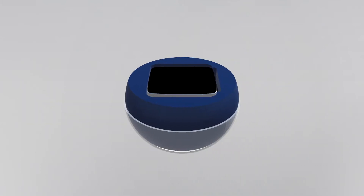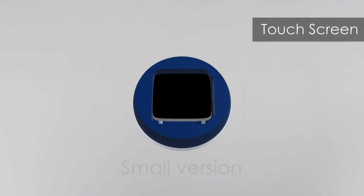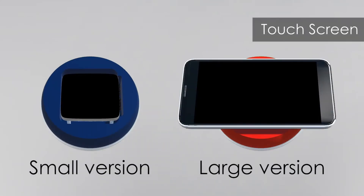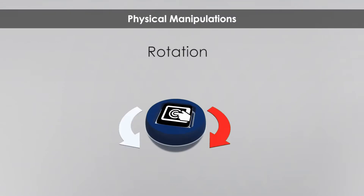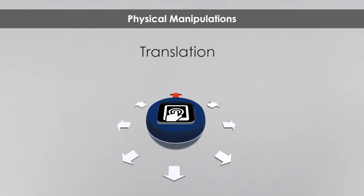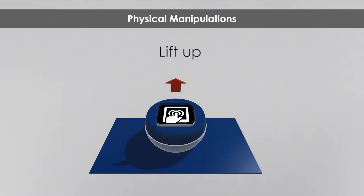TDome results from the combination of a dome-like mouse and a touch screen. It comes in two versions: a small version and a large one. TDome can detect rotations, translations in 8 directions, tilting in 8 directions, and when it is lifted.